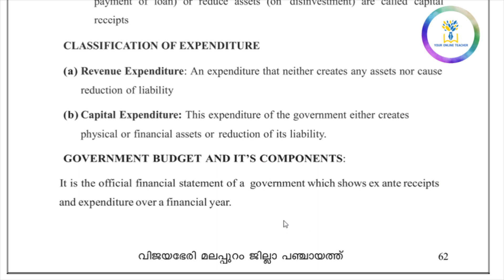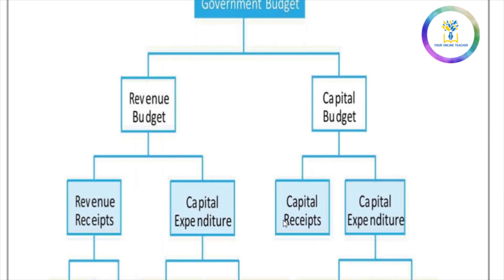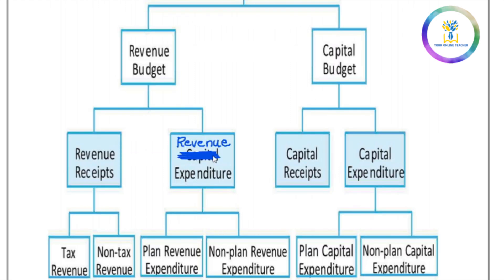We will learn about the government budget and its components — the revenue budget and the capital budget. The revenue budget includes revenue expenditure and revenue receipts. Revenue receipts include direct and indirect tax revenue, and non-tax revenue such as interest, dividends, grants, fines, and penalties.